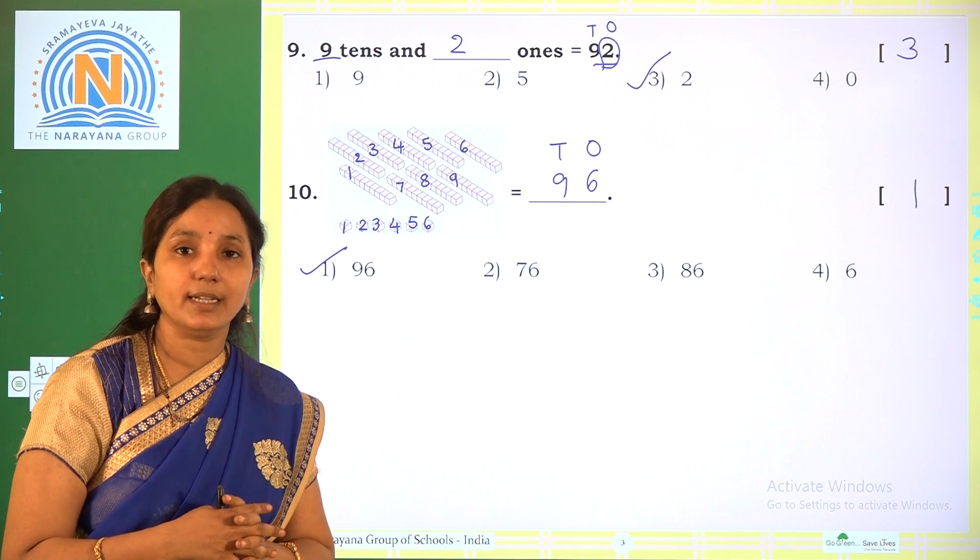Now the fourth one. 6 tens and 3 ones make. So here 6 tens and 3 ones — tens: 6, ones: 3. Which number will you get? That is 63. So which is the correct option? Option 2.